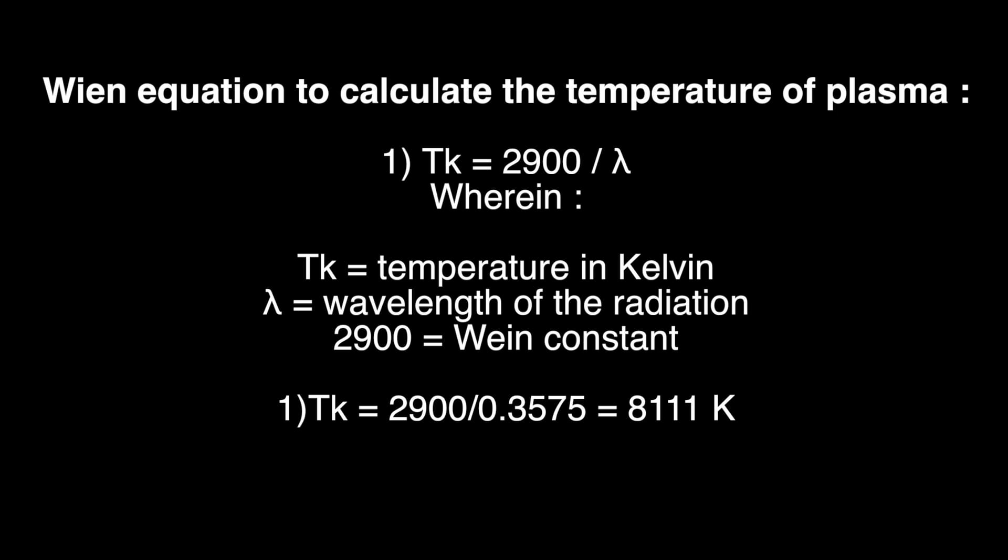Tk equals 2900 divided by lambda, where Tk is the temperature in Kelvin, lambda is the wavelength of the radiation that we have seen with the spectrometer, and 2900 is the Wien constant.